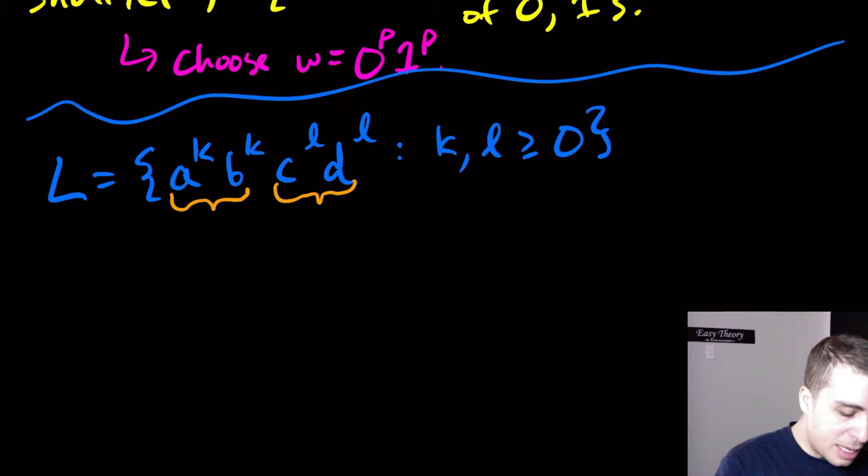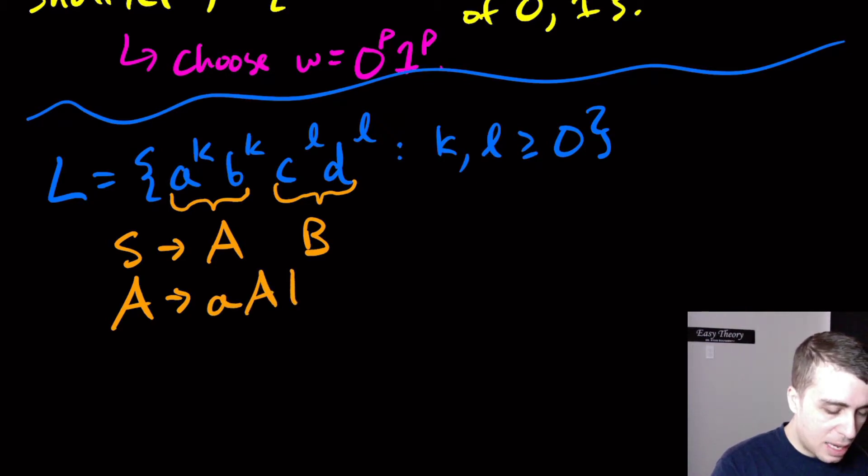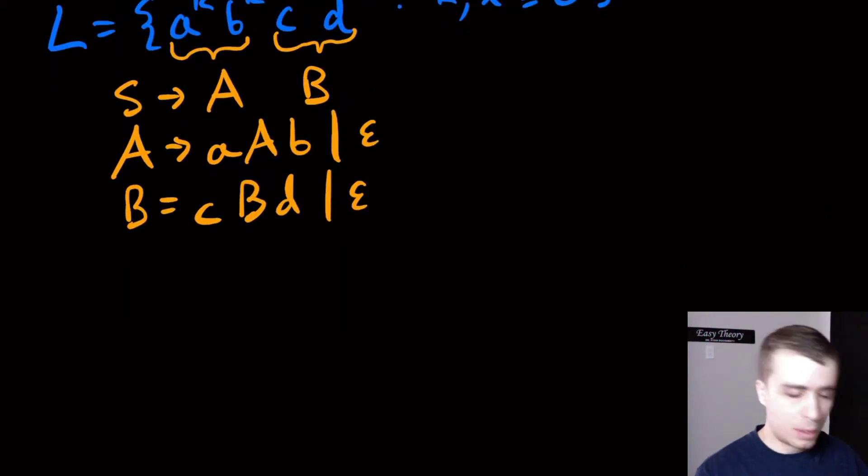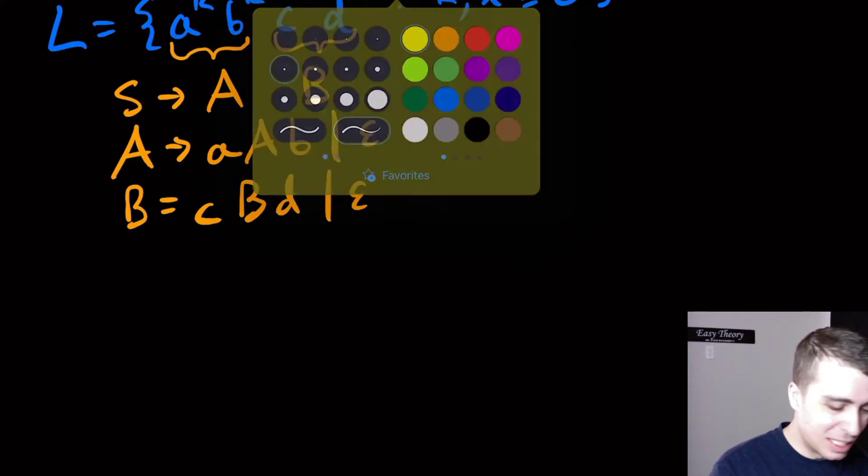The way to do that is I'll have S going to AB. A is going to make this first part and B is going to make this part and that's pretty easy to do. A is going to make aAb or empty and then B is going to make cBd or empty. It's clearly context-free and it's not regular so that gives us some hope.